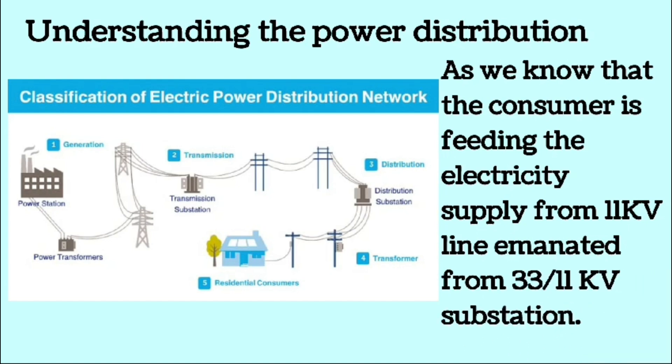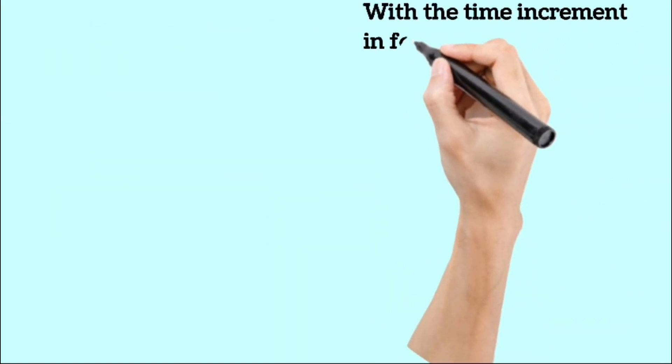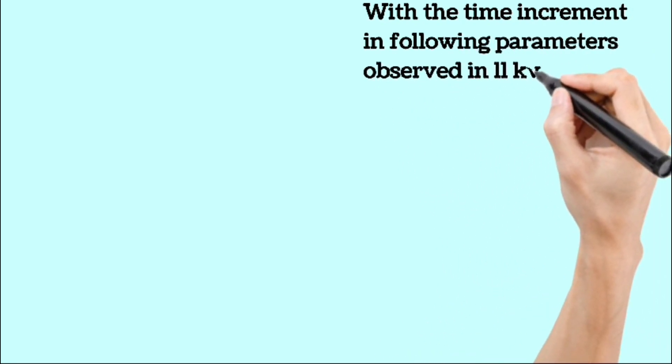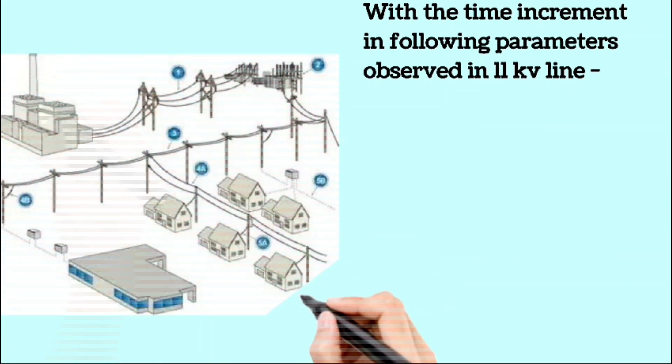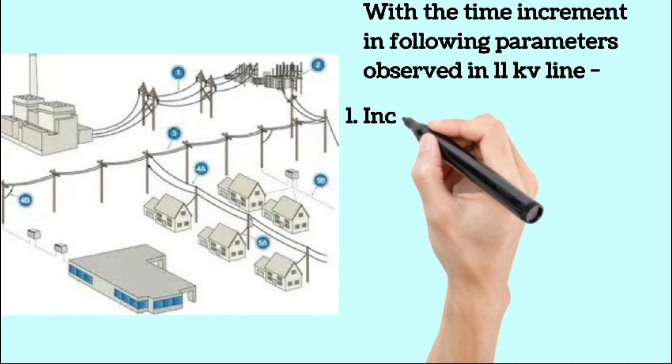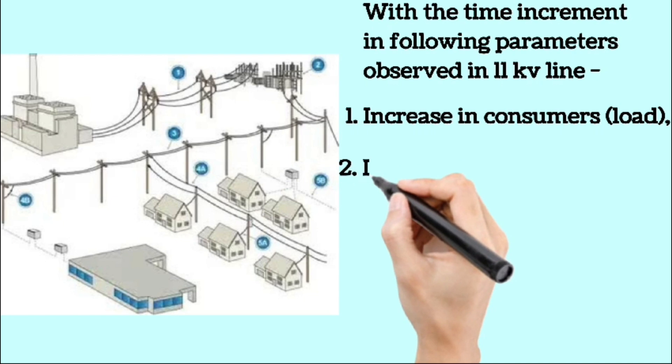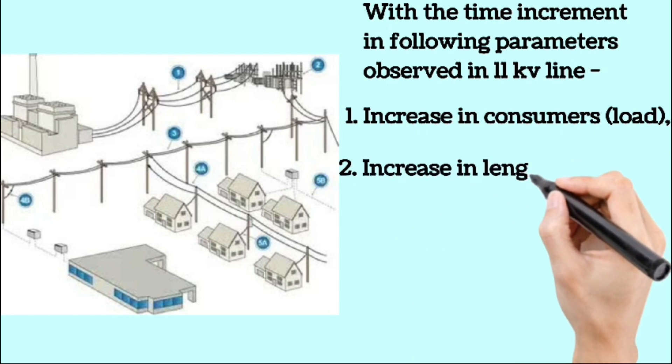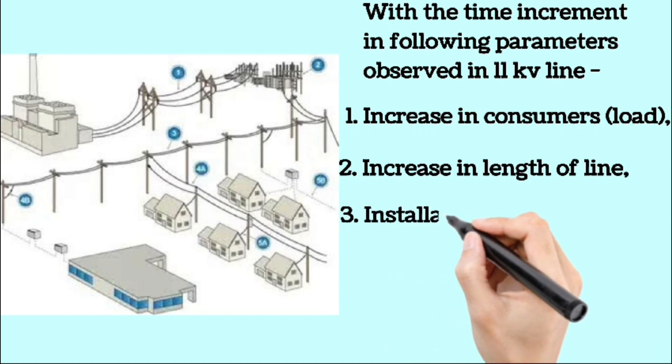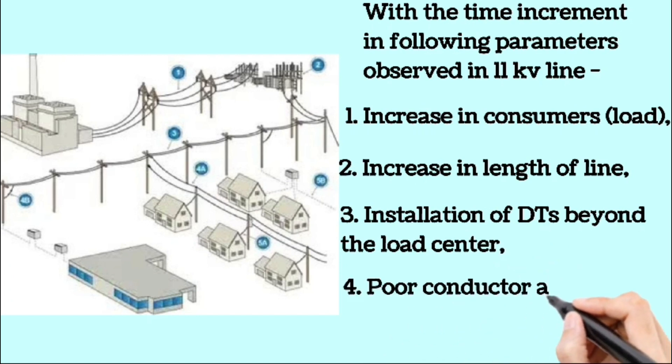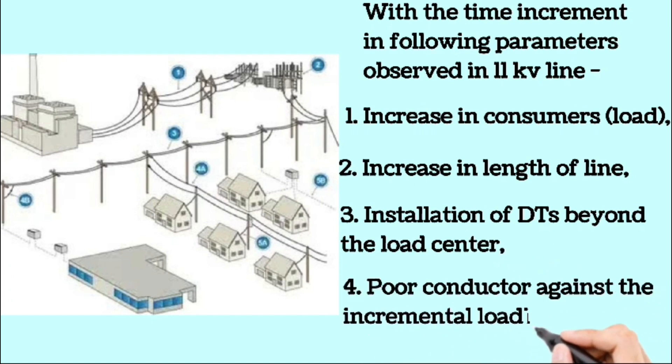Over time, the 11 KV line faced several issues leading to overloading and resulting in poor voltage regulation on the feeder. The primary factors contributing to poor voltage regulation include: a continuous increase in consumers which causes an increase in load, unplanned and unrestricted extension of the line, load unbalancing, failure to install additional distribution transformers at load center, and lack of conductor replacement despite these increasing demands. These factors collectively contribute to poor voltage regulation in any 11 KV feeder.